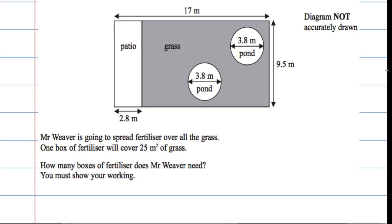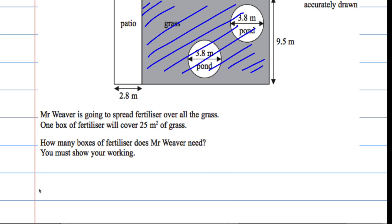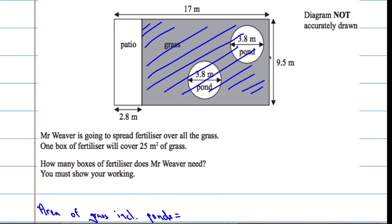So let's work out the area of the grass which would include the two ponds. So this total area here. The way we go about doing that is we need to do the length by the width. So this is the area of the grass including ponds. And that's going to be 9.5 which is this.